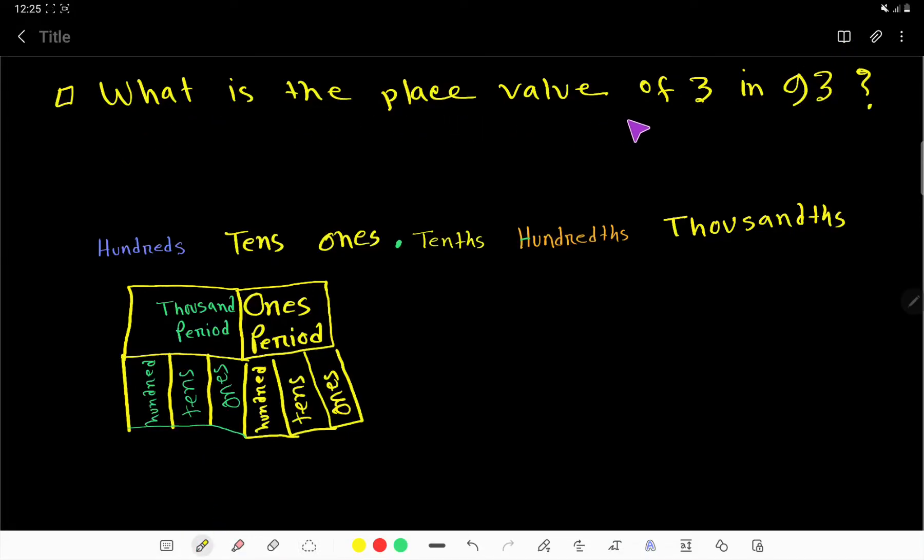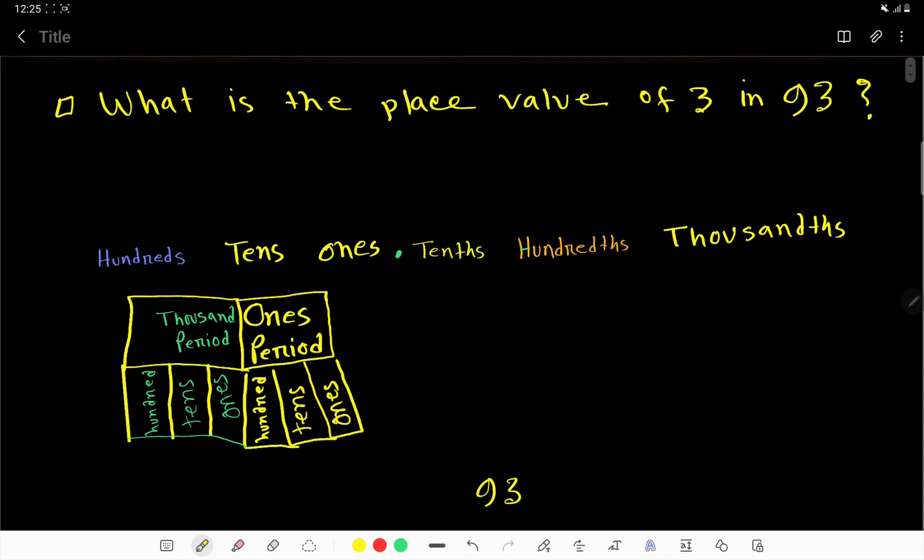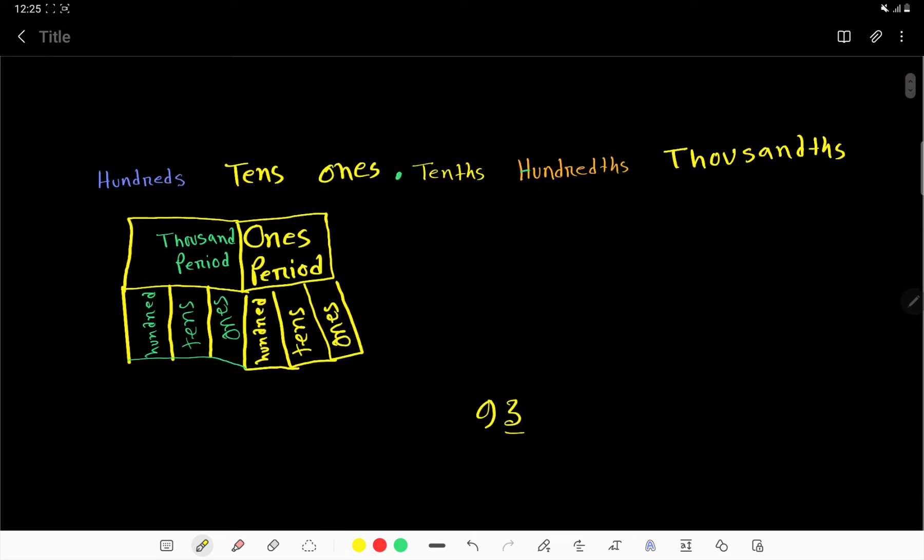Well, what is the place value of 3 in 93? Look, in 93 we have to find out the place value of 3. So this is a whole number, and in whole numbers we have ones, tens, hundreds, thousands period, millions period.